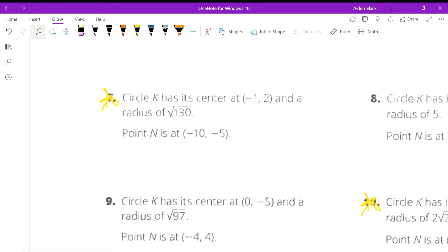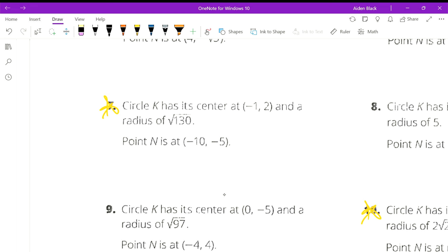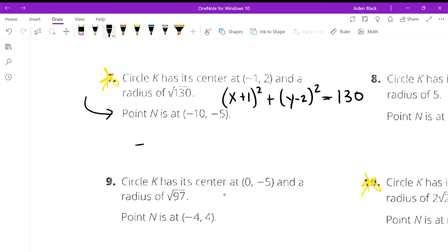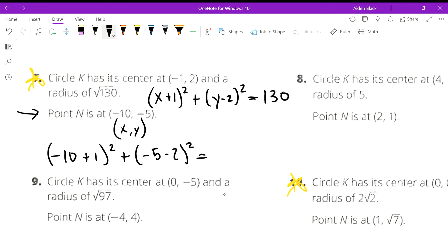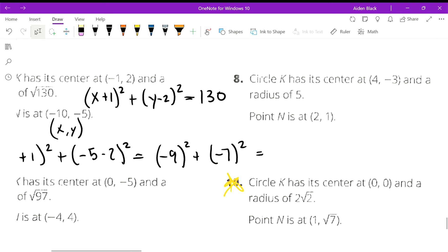Let's try one that does not have this center at 0,0. So x plus 1 squared plus y minus 2 squared equals 130. That's our radius squared. Let's see if point N lies on this circle. We will plug it in for x. Remember this is xy, and negative 5 for y. What does this give us? We get negative 9 squared plus negative 7 squared, which equals 81 plus 49, which gives us 130. So it lies on the circle.